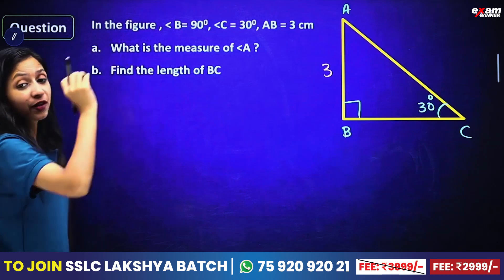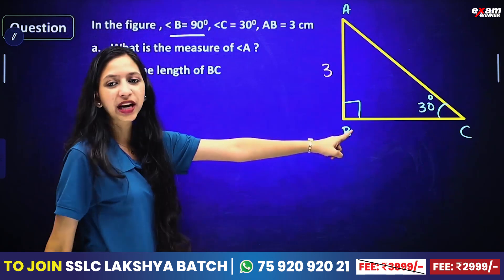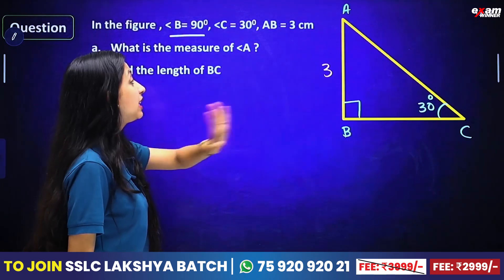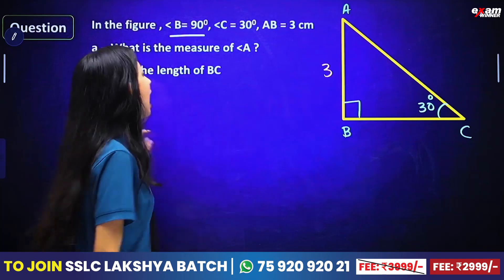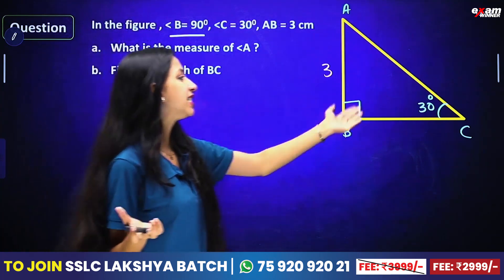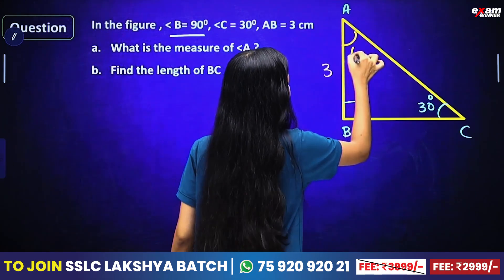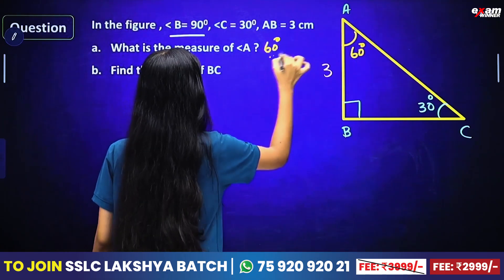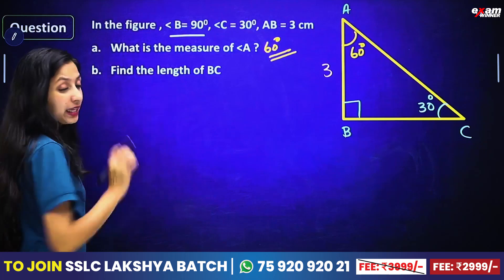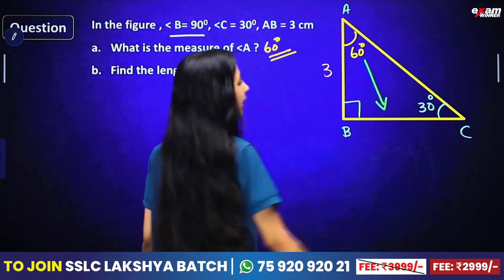In this figure, this is what we have shown in the previous year. We have angle B equal to 90 degrees, angle C equal to 30 degrees, and AB equal to 3 cm. The first question is: what is the measure of angle A? Angle A is very simple — here is 90 and here is 30, so angle A is 60 degrees. The first answer is 60 degrees.